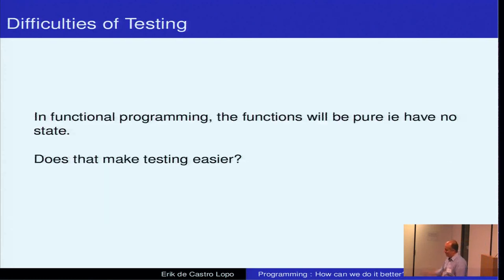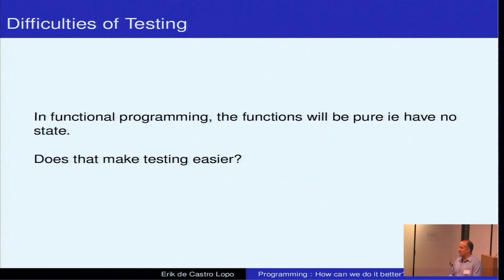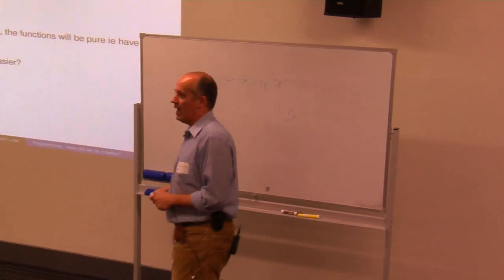I raise this mainly because in functional programming — one of my personal hobby horses — functions have no state, so there are no state transitions to change. An example of a pure function is sine. Y equals sine of X. No matter what time of day, month, year, or century, when you put X equals 1.3 in, you will get out the sine of 1.3. It doesn't change.